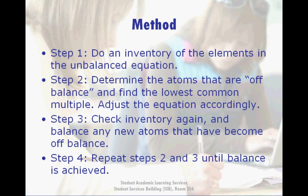First, let's review the steps for balancing a chemical equation. Step 1 is to take an inventory of all the elements in your equation so that we can easily recognize imbalances and keep track of the changes we make. Step 2 is to identify the off-balance atoms and use lowest common multiples to begin adjusting your equation.